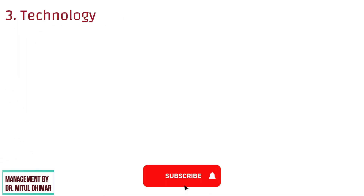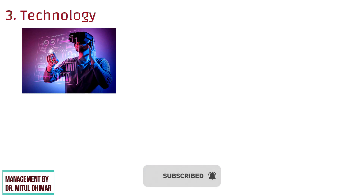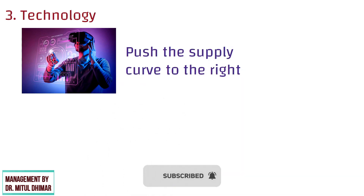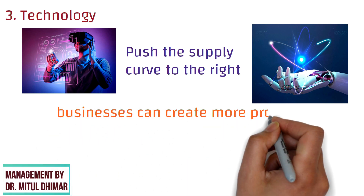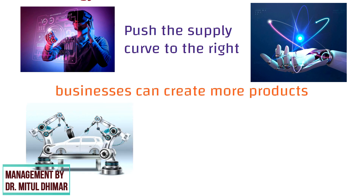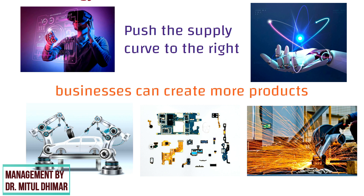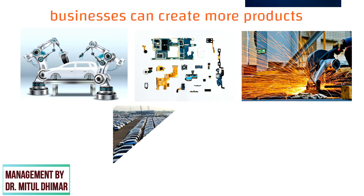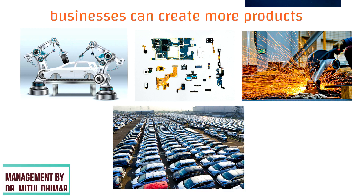Number 3: technology. The use of new and advanced technology can push the supply curve to the right. As new innovation techniques enter the supply chain, businesses can create more products. For example, in a vehicle manufacturing plant there may be a new piece of technology that is able to speed up the production process. As a result, it may be able to manufacture twice as many motor vehicles a day.